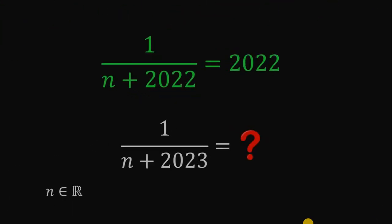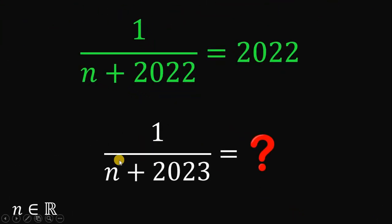Here's the question. Solve for the value of 1 over N plus 2023 given that 1 over N plus 2022 equals 2022. You can pause this video if you want to give this problem a try.